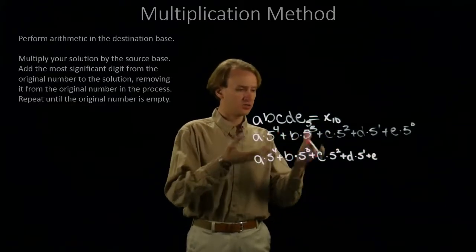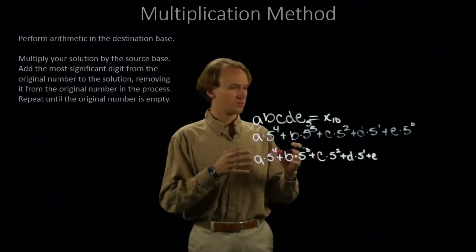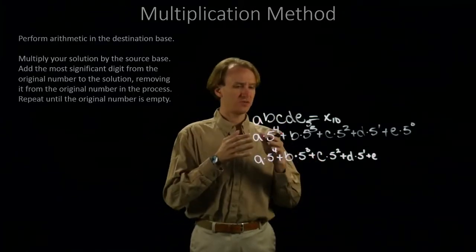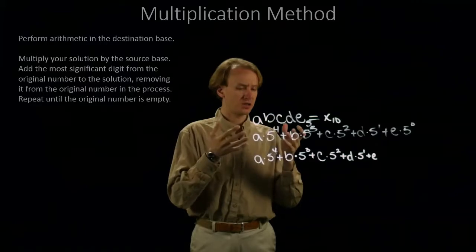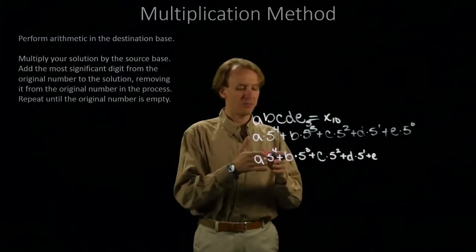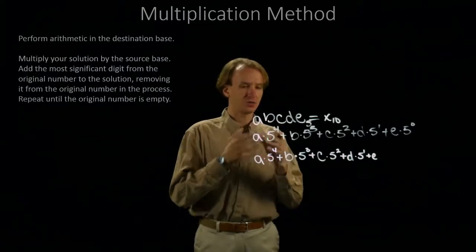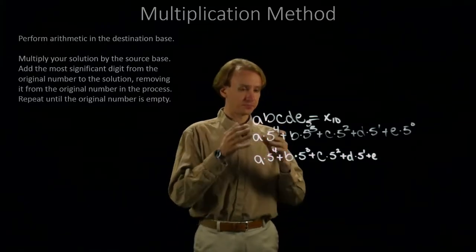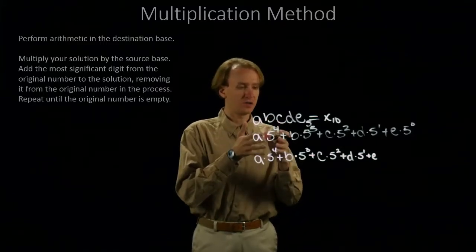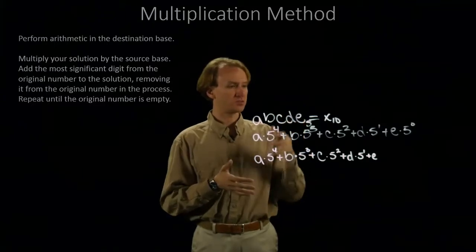So, as you can see, these two representations are now the same. But instead of calculating this 5 to the 4th directly, I did it iteratively. Each time I multiplied by my base until I had enough products of that that it equaled the expected amount. That's because I multiplied by 5 for each of these terms that was greater than the base one.